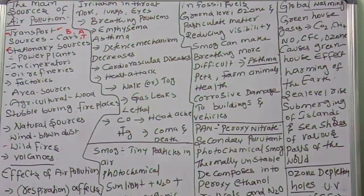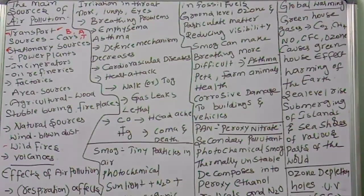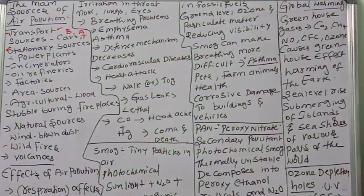These are all the main sources of air pollution. Near thermal power plant stations, you can see how much smoke is released — it is very dangerous. Some factories release very poisonous gases into the atmosphere. Even burning agricultural waste causes dangerous poisonous gases to be released. Wind-blown dust, when blown by the wind, contains many dangerous particles.